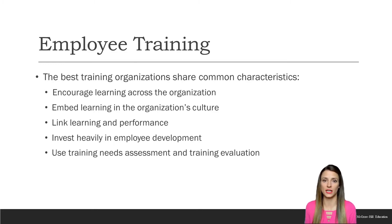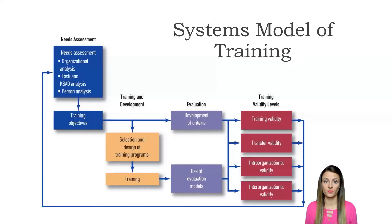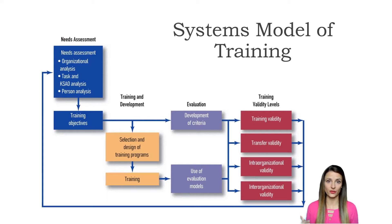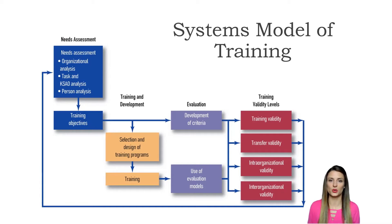In order to develop an effective training program, we first start with the training needs assessment. The second step is to identify the objectives of the training program — what are we trying to teach — and to identify the evaluation criteria we will use. The third step is to design and deliver the training program. The fourth step is to evaluate it and make any necessary changes.